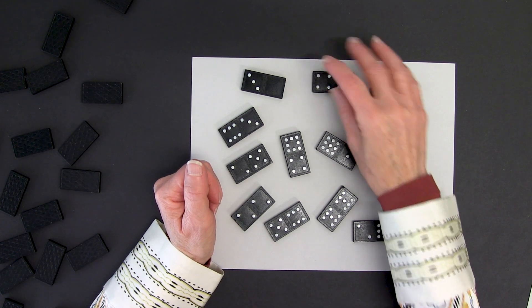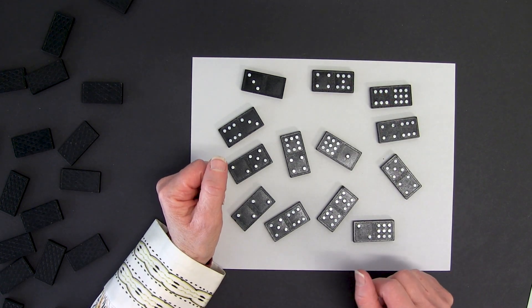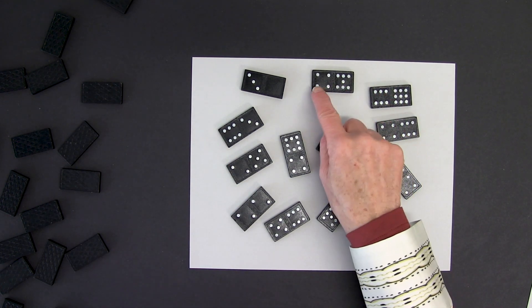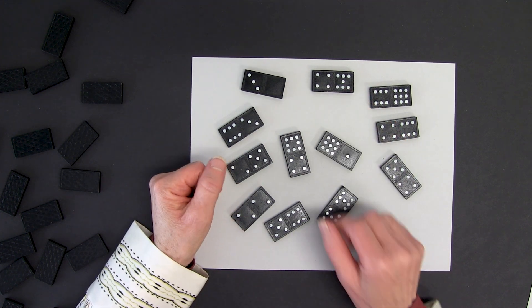These are dominoes. You will notice that each domino has two sides. On each side, we have dots. These dots are referred to as pips.